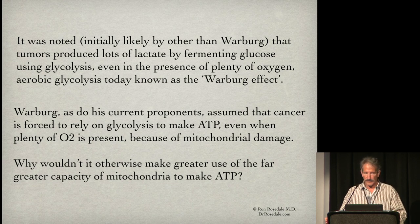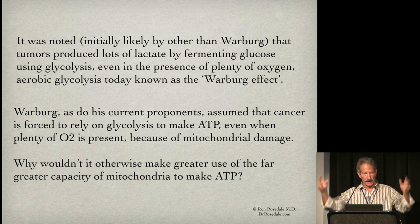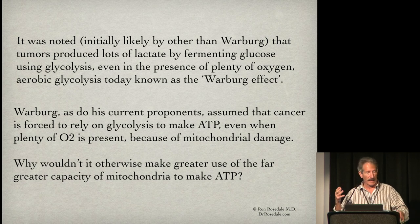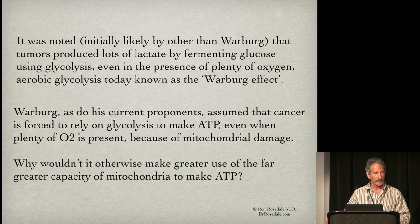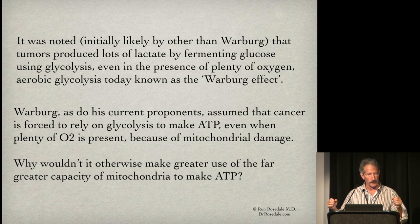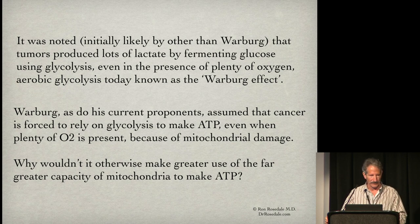Warburg and his current proponents assumed that cancer had to use glycolysis to make the copious fuel necessary to produce baby cancer cells. They asked: why would cells not utilize mitochondria if they were healthy, since mitochondria can produce at least 16 times more ATP than glycolysis in a given time? Healthy cells always utilize their mitochondria when oxygen is available. So Warburg said cancer had to be due to irreversible mitochondrial damage — and he was adamant about that for decades. Then in the 1950s, when they found the first oncogene, his theory fell into disrepute.